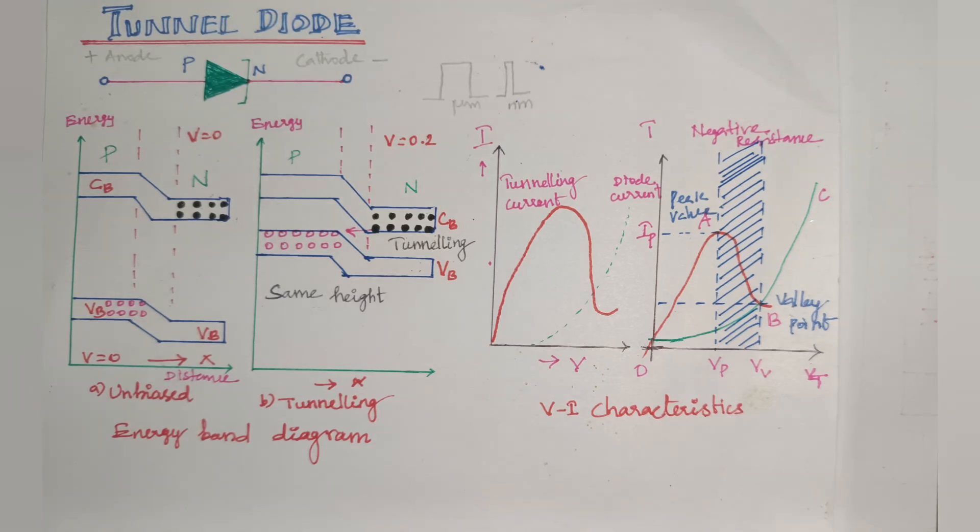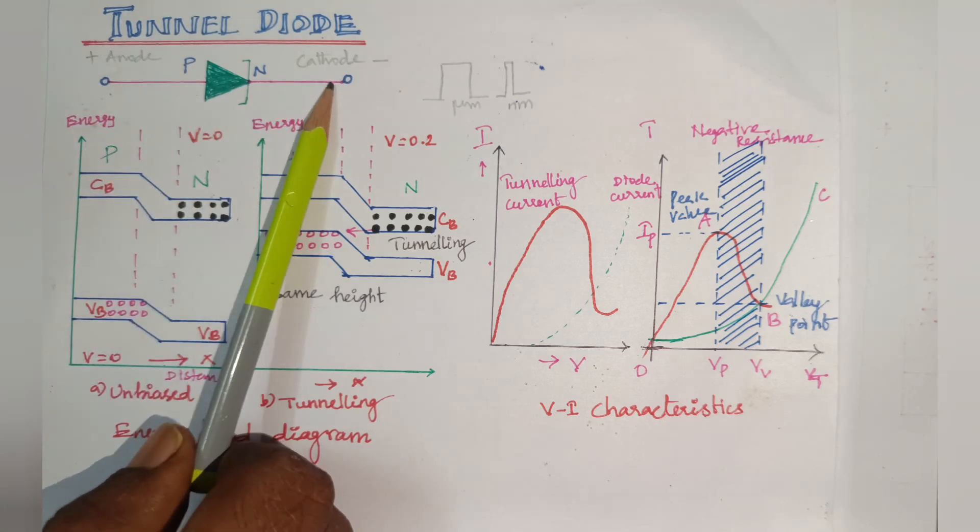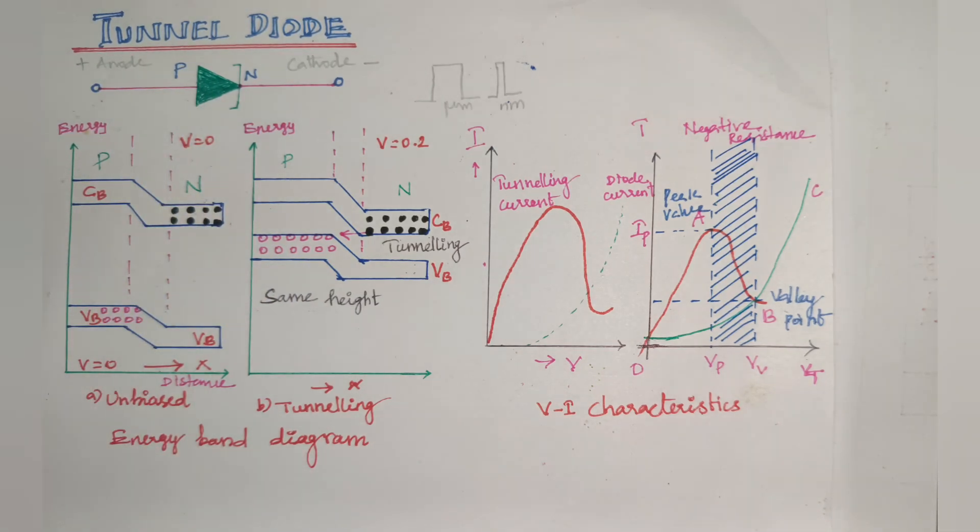Construction: PN junction diode with heavily doped P-type and N-type semiconductor. Materials used are germanium, arsenide germanium, antimony—these are some of the semiconducting materials. P-type and N-type materials heavily doped give a large number of majority charge carriers. As a result, the depletion layer becomes very narrow. This is the symbol of the diode: P-type anode, N-type cathode, forward bias.